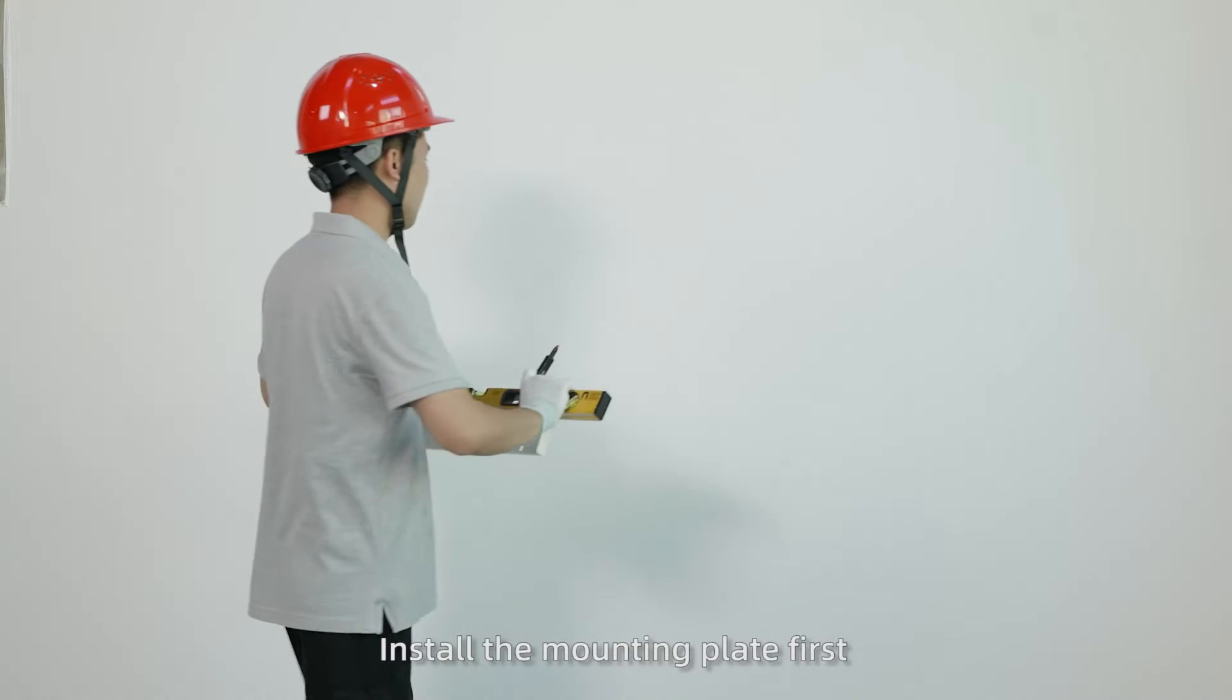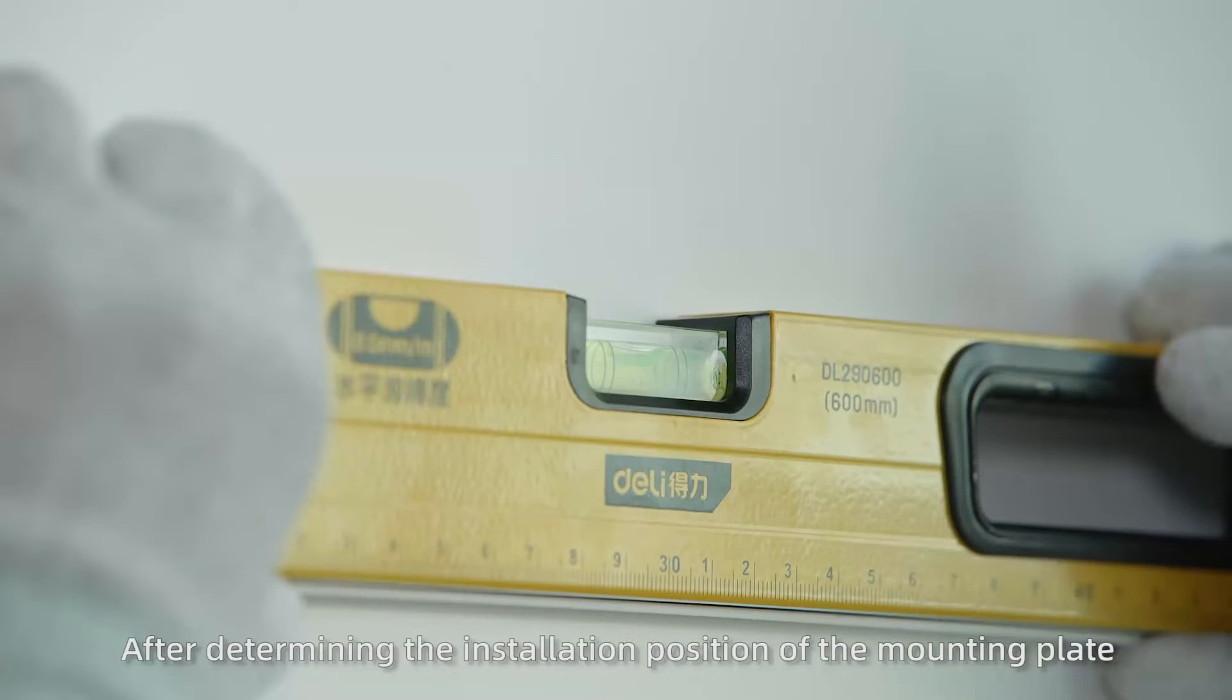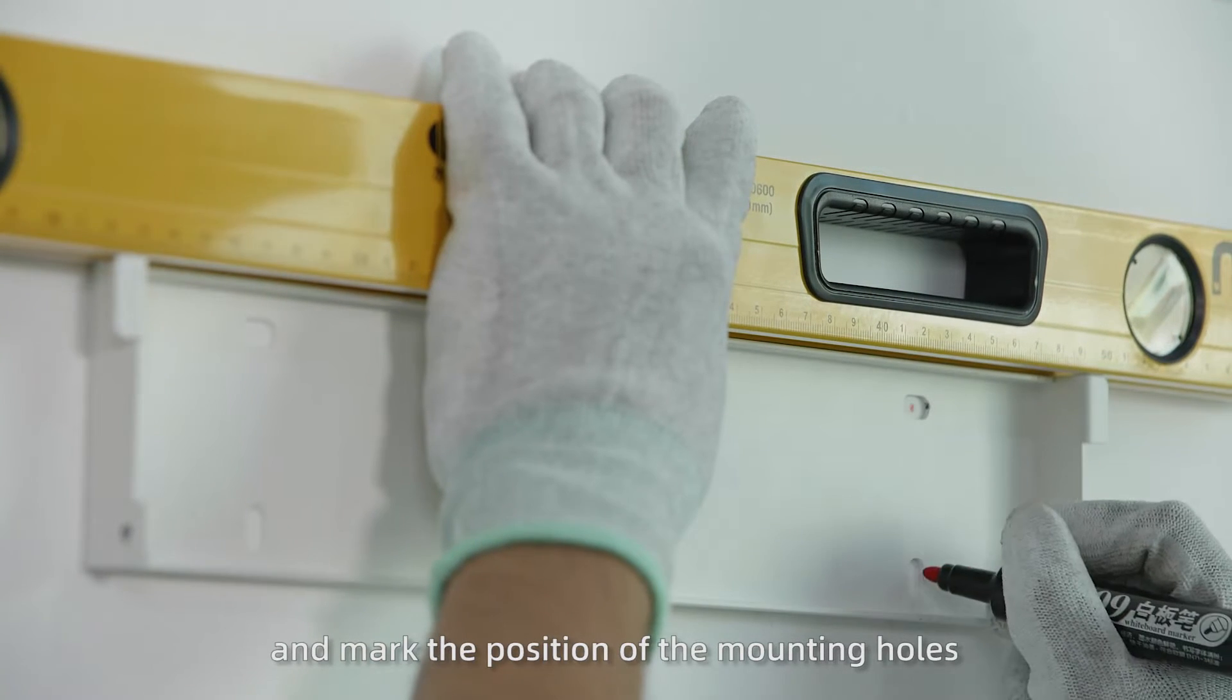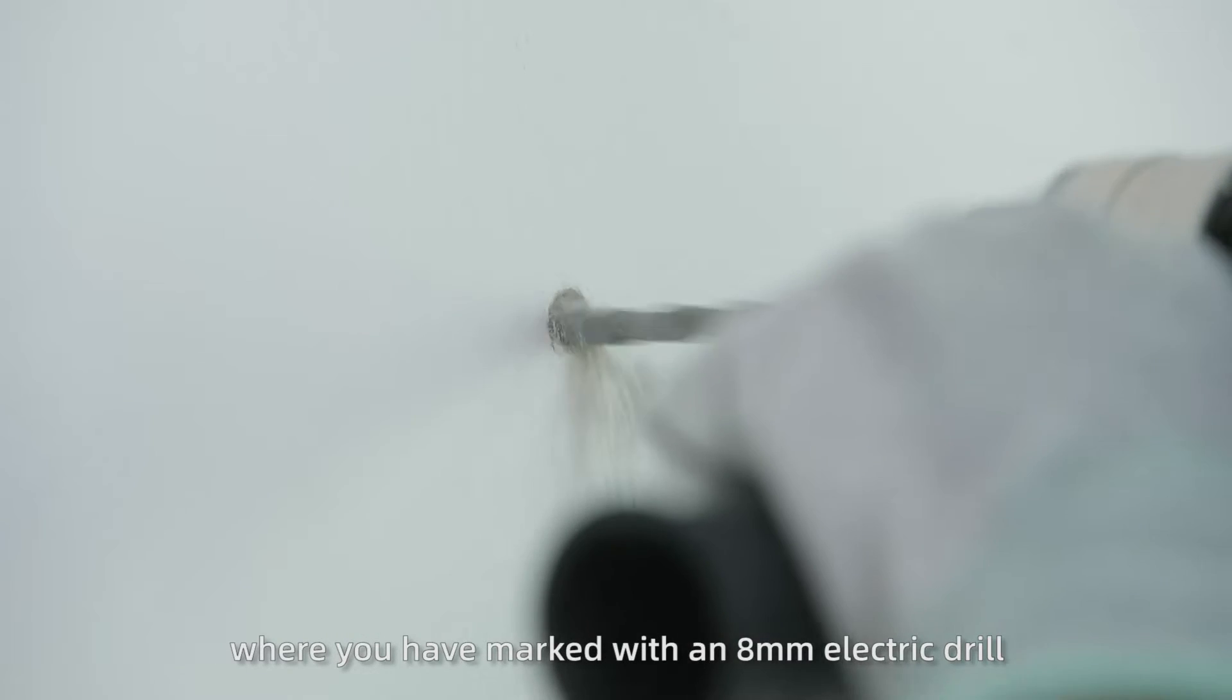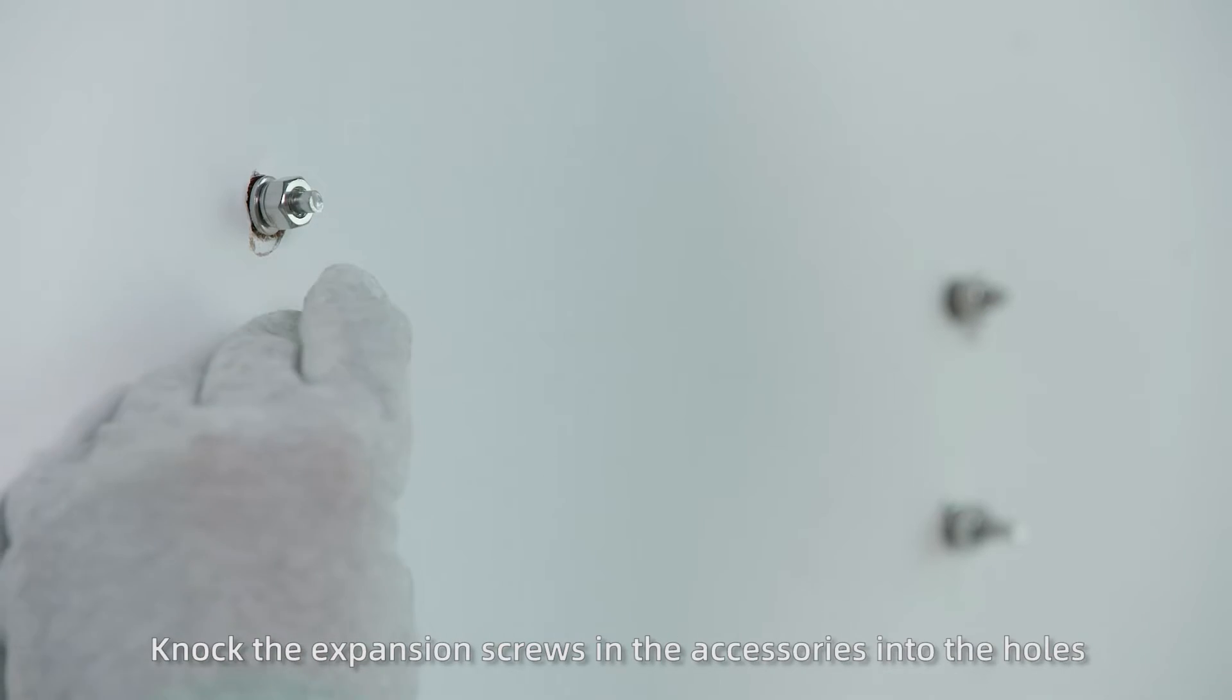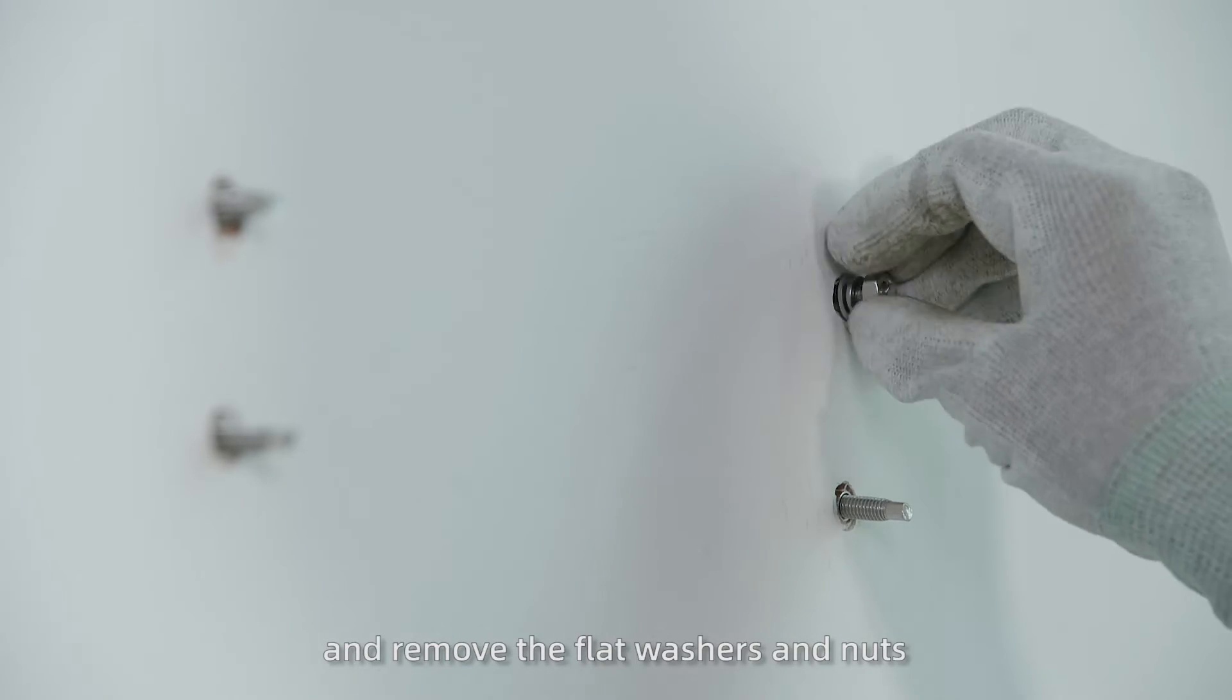Install the mounting plate first. After determining the installation position, use a spirit level to ensure balance and mark the position of the mounting holes. Then punch holes on the wall or bracket with an 8 mm electric drill, and the hole depth should be more than 45 mm. Knock the expansion screws into the holes and remove the flap washers and nuts.